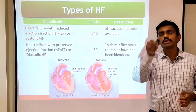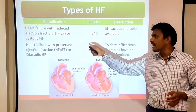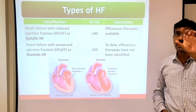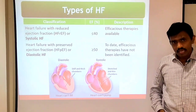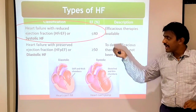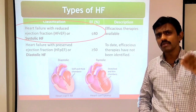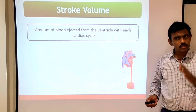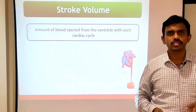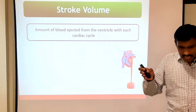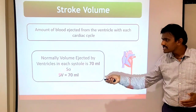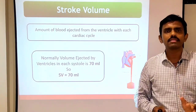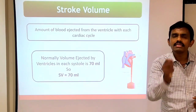Systolic heart failure is also known as heart failure with reduced ejection fraction — HFrEF. To understand this, we first need to understand stroke volume. With every contraction, the heart sends out a certain amount of blood. Normal stroke volume is 70 ml — with every contraction, 70 ml of blood is sent out, which is the body's requirement.